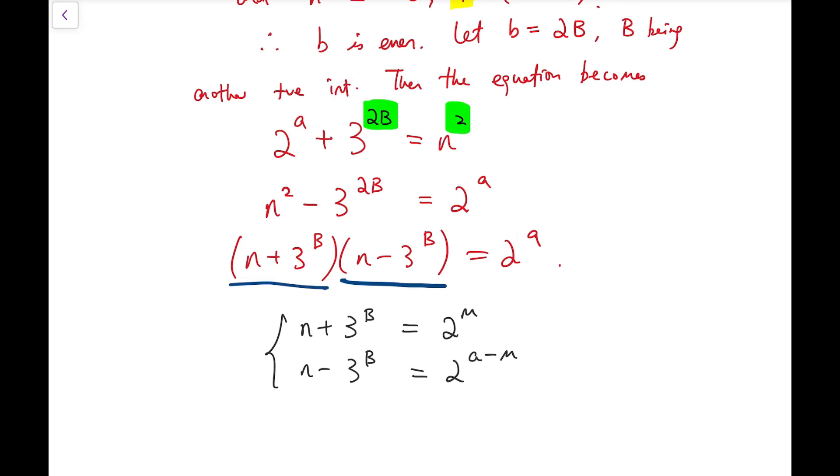And because they multiply together, when they multiply together, we have 2 to the power of a. So I set the exponents plus m and a minus m so that the sum will still be a.